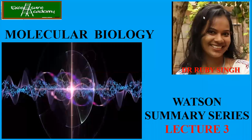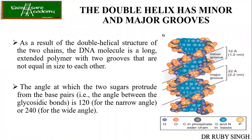Good afternoon and welcome back to Excelsior Academy. This is the third lecture from the MoleBio series, using Watson as the reference book. In the previous lectures we talked about the double helical structure, complementarity of the DNA structure, and the major and minor grooves. Most of the enzymes and catalytic activity happens only at the major groove, because it gives space for the enzymes to bind, whereas in the minor groove the space is less and no catalytic activity takes place.